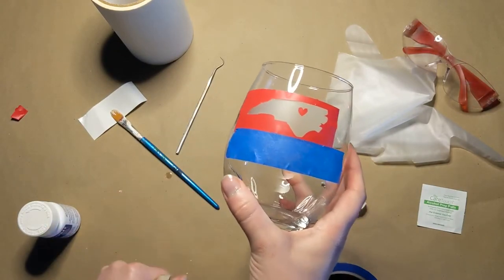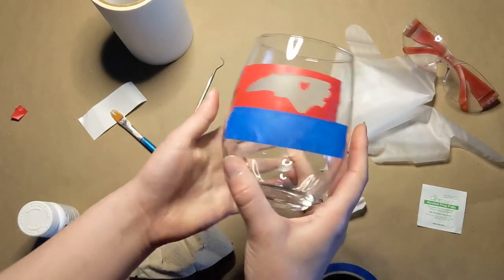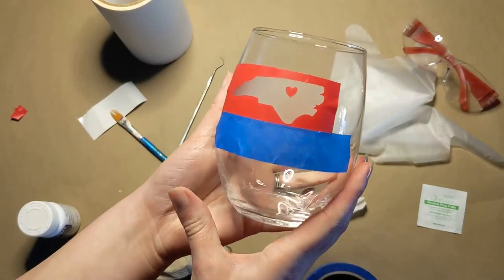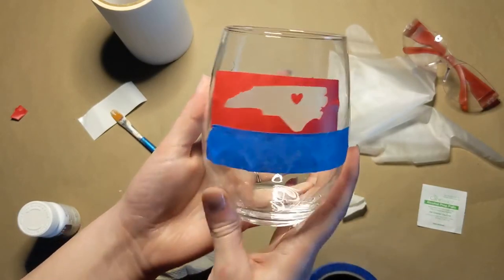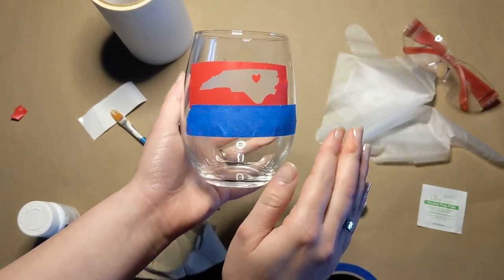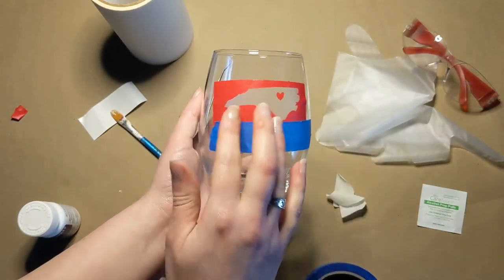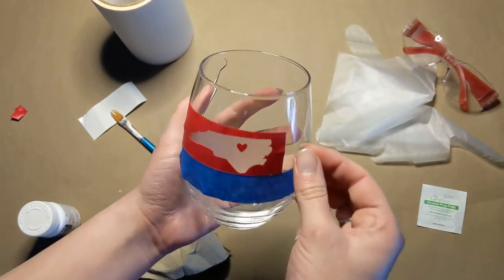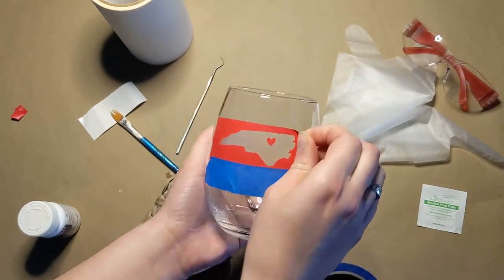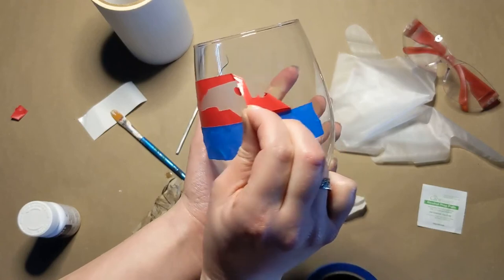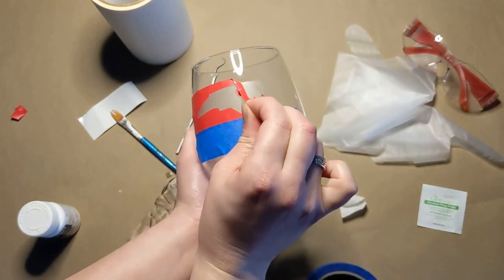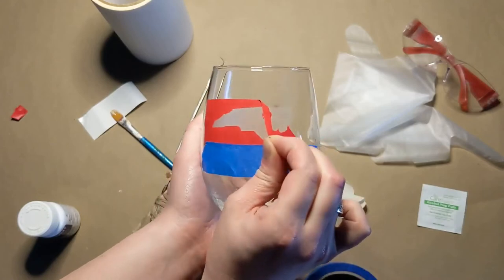Now that the glass is completely dry, we can go ahead and just kind of peel off a corner of this to see how etched it is, because if we want to, we can always do another layer of the glass etching cream while the stencil is still on. And you can see that it's still a little bit wet, but I feel pretty happy with this, so I'm going to go ahead and take this whole thing off.